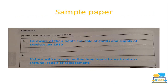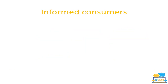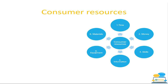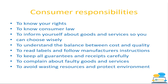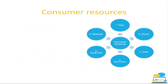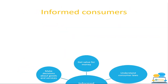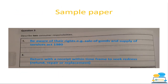Here's a sample paper question: describe two consumer responsibilities. For example, one would be to be aware of your rights — knowing about the Sale of Goods and Supply of Services Act 1980, returning with a receipt within the timeframe to seek redress — that's your refund, repair, or replacement. This comes up a couple of times in the sample papers so it might be an area to look over.